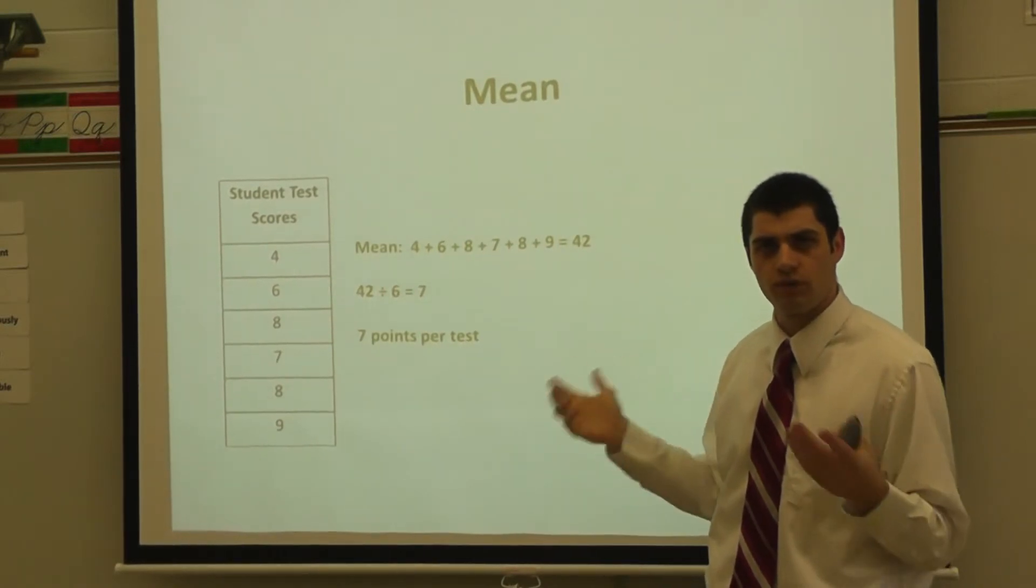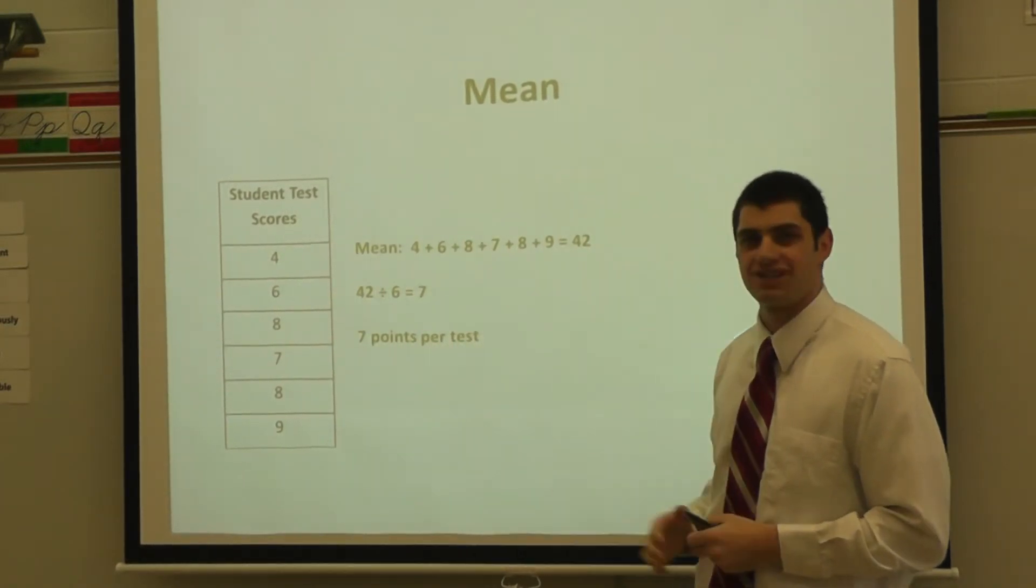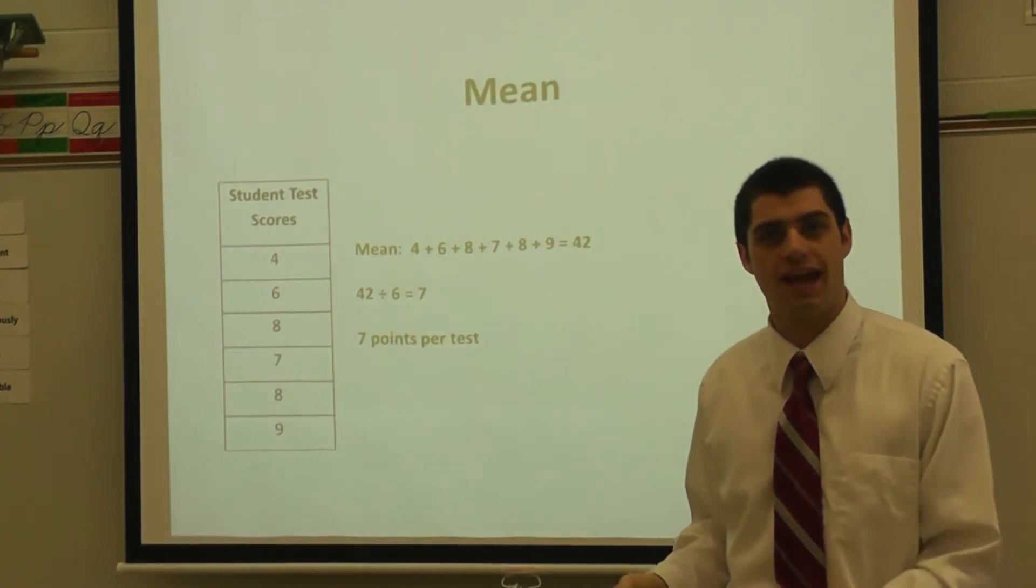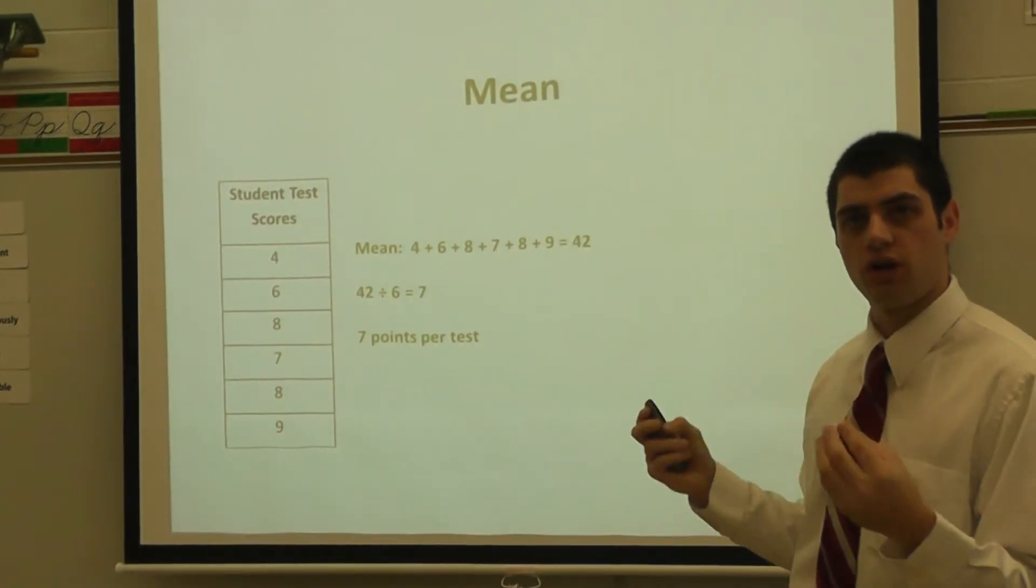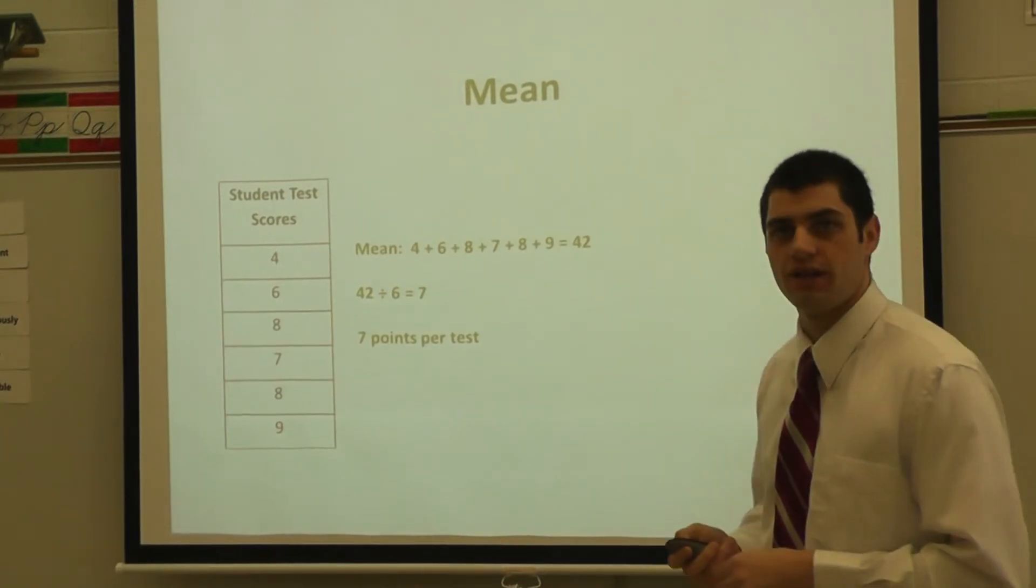Well again we need to put what are we talking about? 7 what? 7 points per test is the mean or the average score that you would get on one of these quizzes. Again, you total up that amount and then you divide by the total set of data.